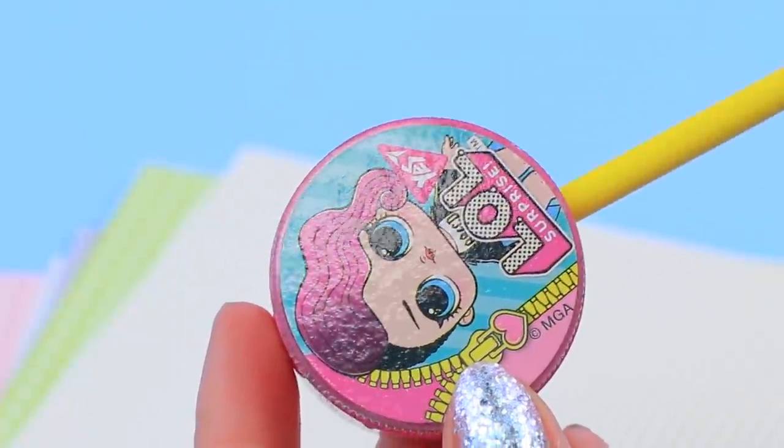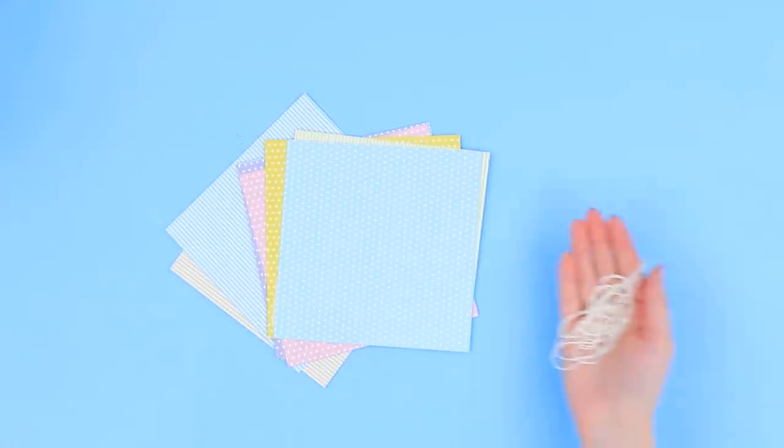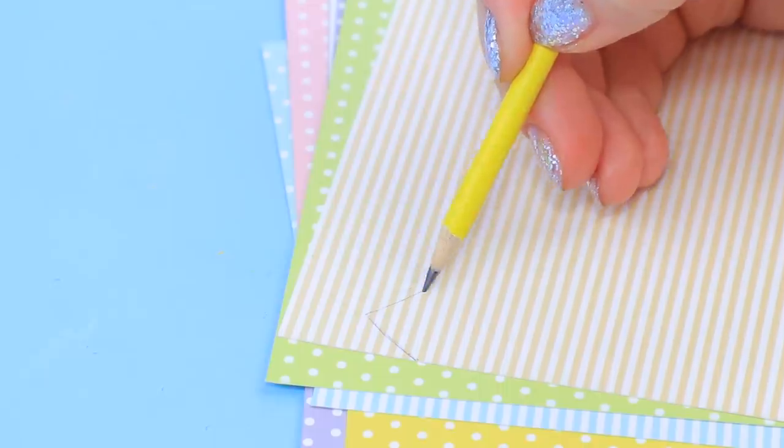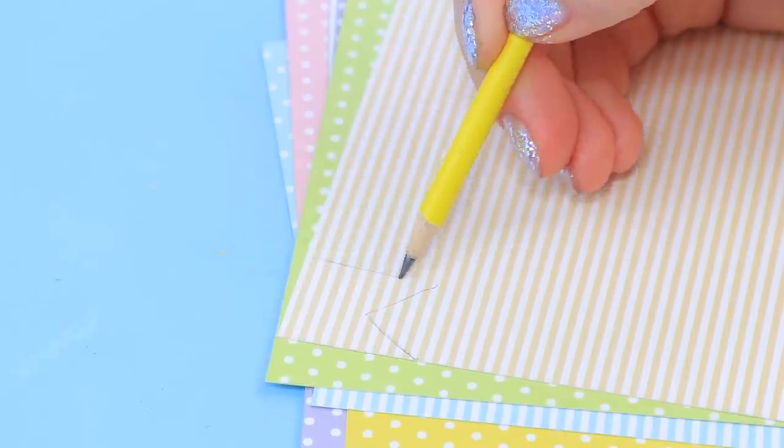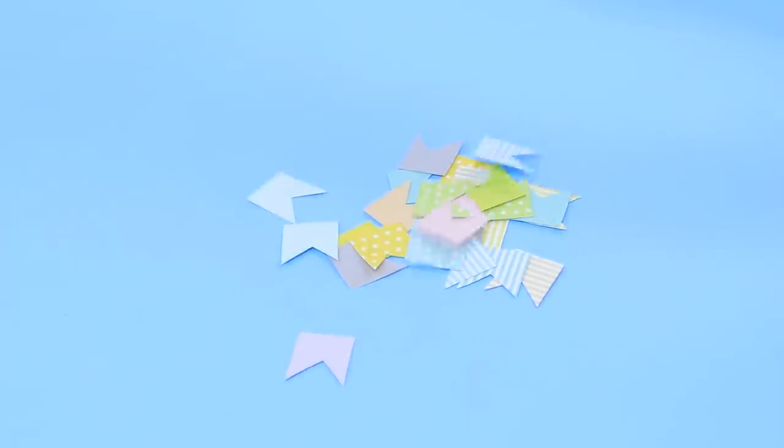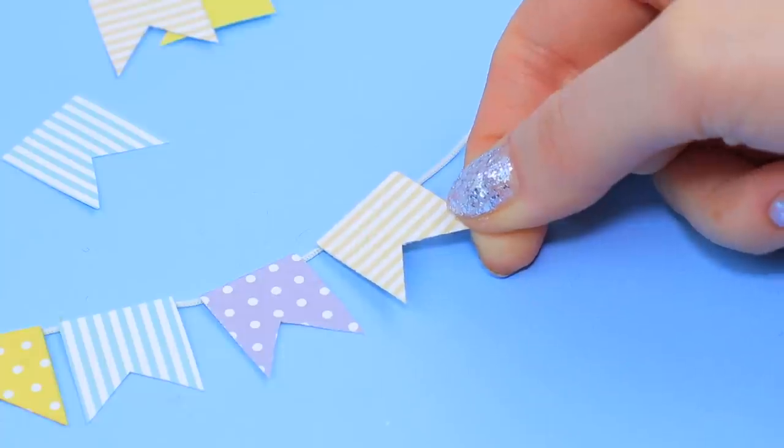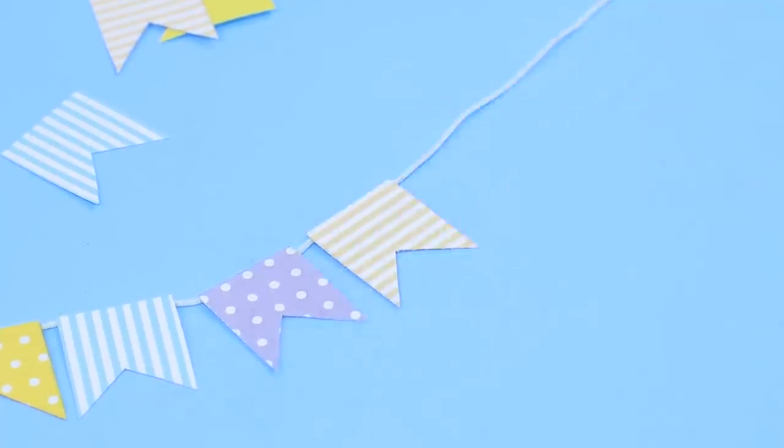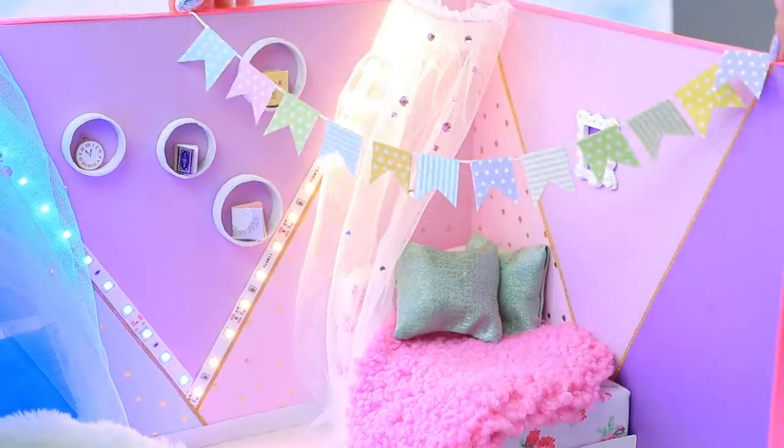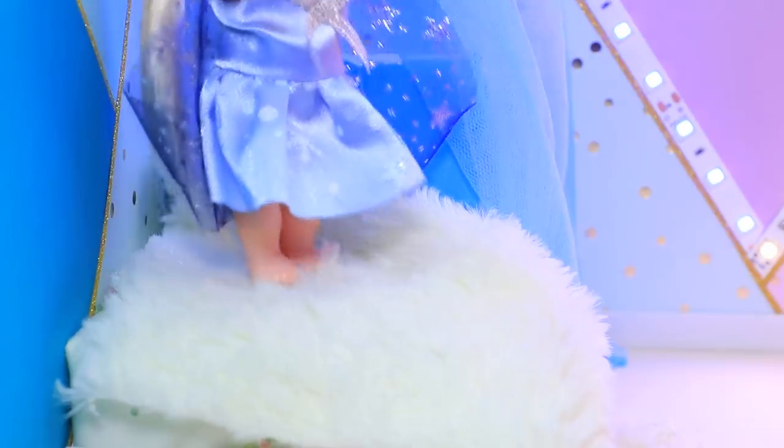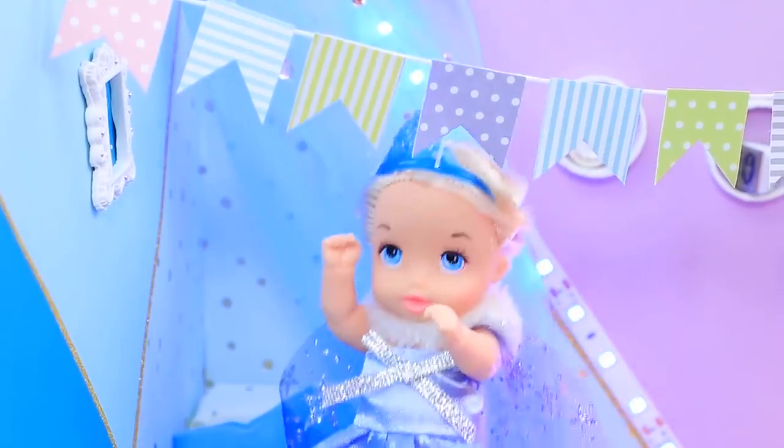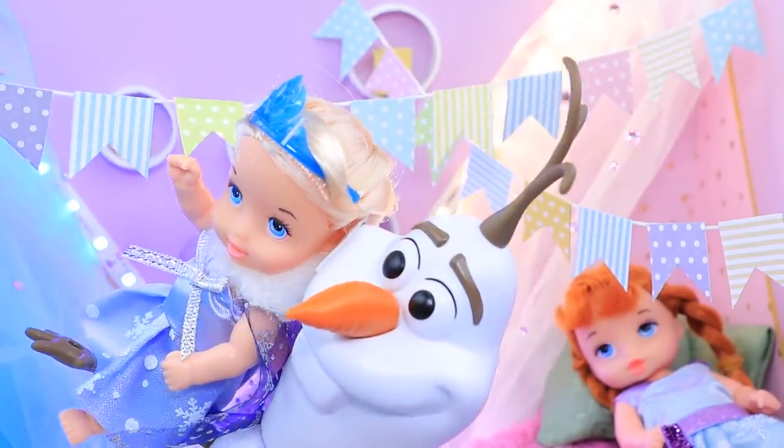And now we'll show you that a paper garland is very simple to make and it looks nice! Take sheets of different designer cardboard. Draw a template on one and cut out a lot of colorful identical flags. Hot glue them to a white cord one after another. Hang the garlands near the beds. It's better to glue them to the box. Little Elsa loves it! Even Olaf likes it a lot!